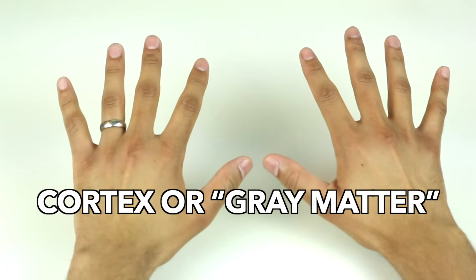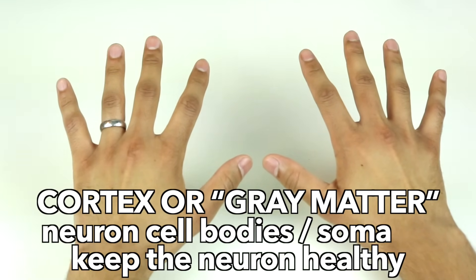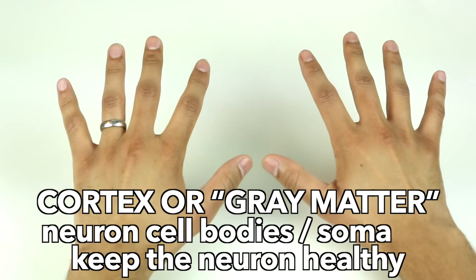The outside of the brain is darker than the inside because it's lined with neuron cell bodies. Cell bodies are also called soma. Cell bodies keep the neuron healthy and functioning.